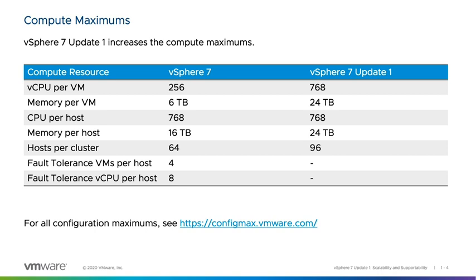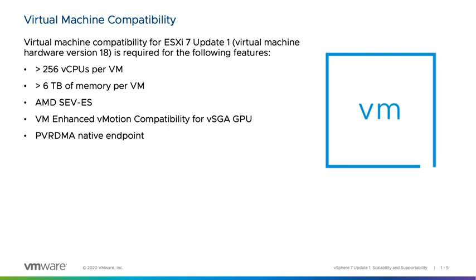vSphere 7 Update 1 introduces a new virtual machine compatibility mode — virtual machine compatibility for ESXi 7 Update 1, also referred to as virtual machine hardware version 18. This new compatibility version is required for VMs with greater than 256 virtual CPUs, VMs with greater than 6 terabytes of memory, the AMD SEV-ES feature, VM-EVC for GPUs, and PV-RDMA Native Endpoint. For more on virtual machine compatibility, see VMware Knowledge Base Article 1003746.